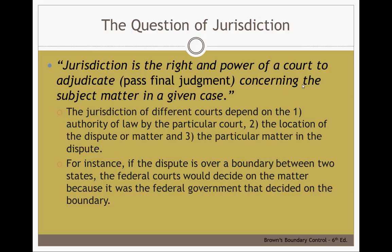For instance, if the dispute is over a boundary between two states, this is no longer going to be a state matter, but rather a federal matter, because it involves more than one state. The federal courts would then decide on the matter, because it was the federal government that decided on the boundary in the first place. Every state that has been created sent off their macro-boundaries to Congress, and Congress enacted an act that caused that boundary to become a state. There have been disputes about the line between Texas and Oklahoma, and about Louisiana and Mississippi along the Mississippi River.